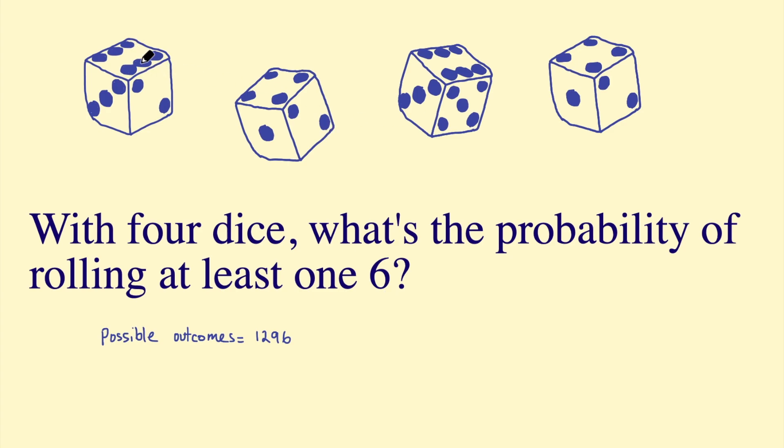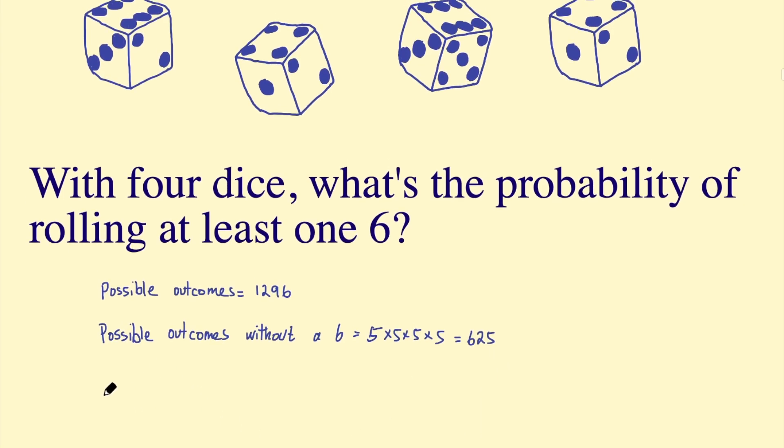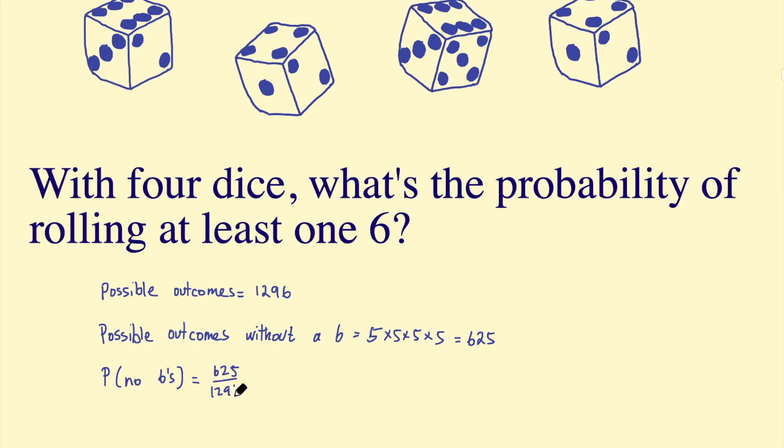And that we can work out fairly easily. We can just think about if this die only had five numbers, there would be five possibilities. Five possibilities on the second die, and same for the third and fourth dice. So we can say the possible outcomes without a six equals 5 × 5 × 5 × 5, or 5^4, which is 625. And then we can say the probability of getting no sixes is the number of outcomes without a six out of the total possible outcomes. That's 625 out of 1,296.